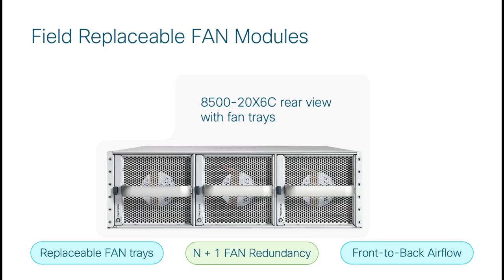Now looking at the back of the chassis, we can see that there are three fan trays. Each of these are field replaceable with no downtime. All three fans are included and used by default. If one of these fans fails, the chassis will continue to operate without interruption while raising an alarm to indicate the need to replace the failed fan. Airflow through the chassis is front to back, meaning that cool air is pulled in through the end of the chassis with the interfaces and power supplies.